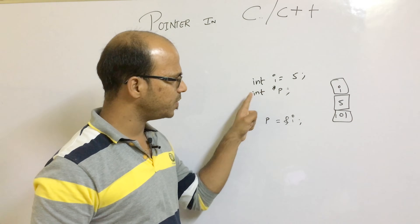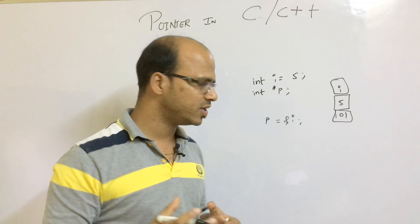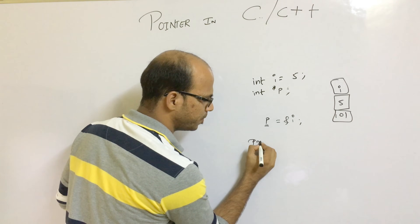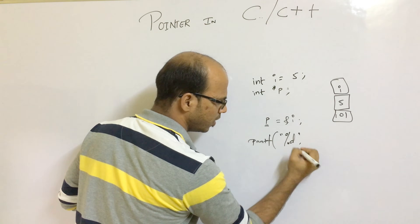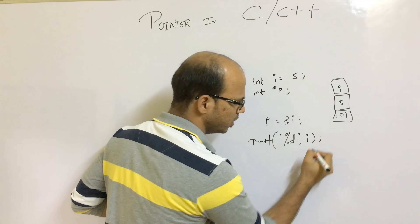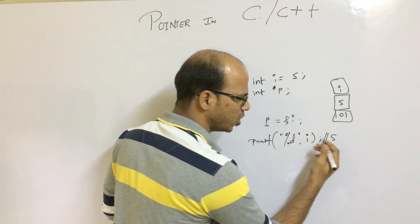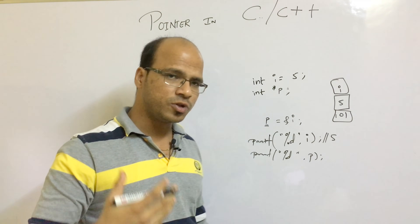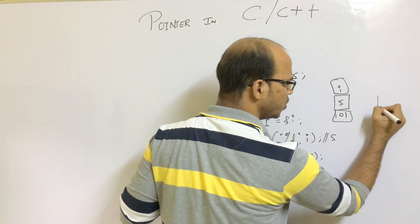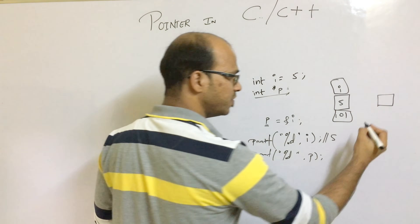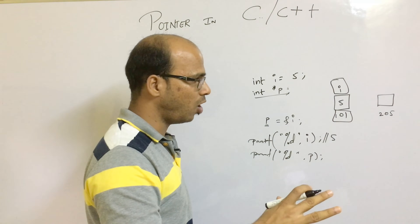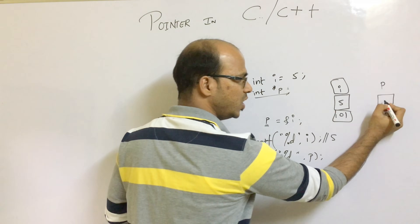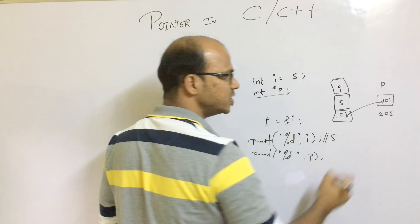If we say int *p and then p = &i, what we get in p is the address of i, which is 101. So the value of p is now 101. As soon as you create a pointer variable, it creates a new memory box with its own address — let's say 205. The variable name is p, and the value stored in p is the address of i, which is 101.